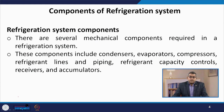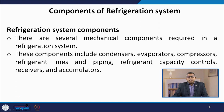Refrigeration systems have various mechanical components. These include condensers, different types of evaporators, compressors, refrigerant lines, piping network, and various components dedicated to refrigerant capacity control, such as receivers and accumulators. It is a complete system.